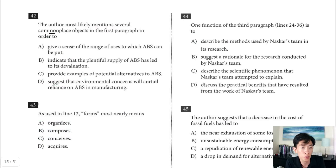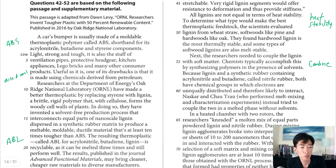Question 42. The author most likely mentioned several commonplace objects in the first paragraph in order to. So let's look at it. First paragraph is where they introduce ABS. It says a car's bumper is usually made of it. And it's also the stuff of ventilation pipes, protective headgear, kitchen appliances, Lego bricks, and many other consumer products. Then it says useful as it is. Why are they mentioning all this? Because they're saying it's useful. It's in a lot of products.